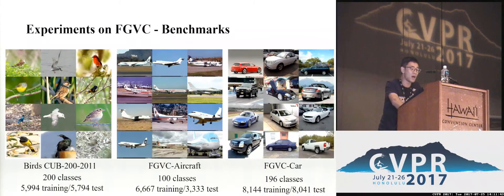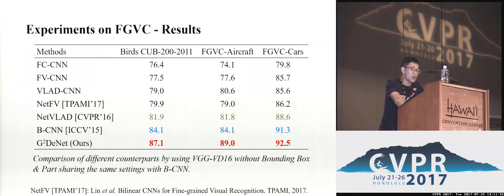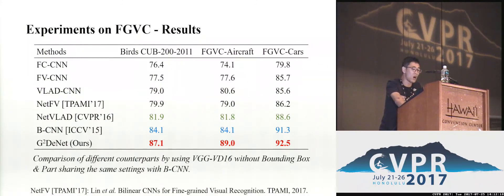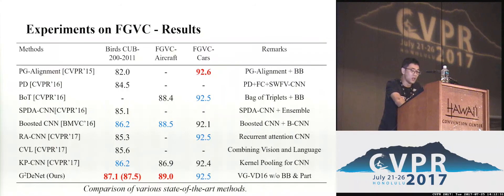Secondly, we evaluate our method on challenging fine-grained visual classification with three widely used benchmarks: birds, aircraft, and cars. We apply VGG-VD-16 as the baseline CNN model and do not use bounding box or part annotations. We adopt the same parameter settings as bilinear CNN and compare with a family of counterpart methods. Our network achieves the best result on all three benchmarks and outperforms NetFV, NetVLAD, and bilinear CNN by a margin. Comparing with various state-of-the-art methods using a single CNN model without bounding box annotations or additional training data, our method achieves the best result on birds and aircraft, and a very competitive result on cars.